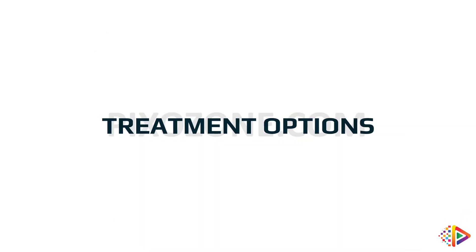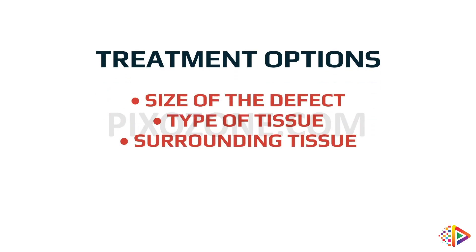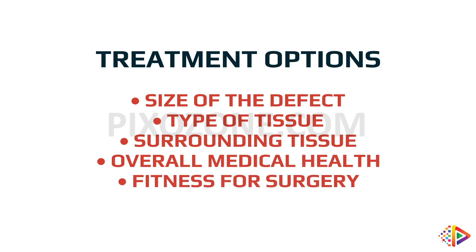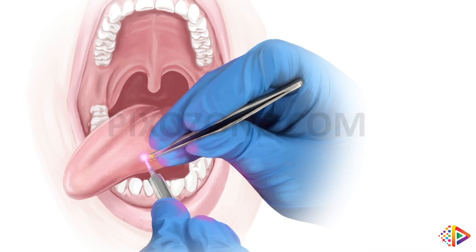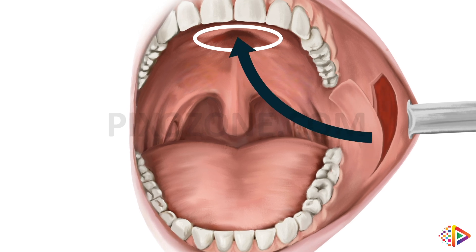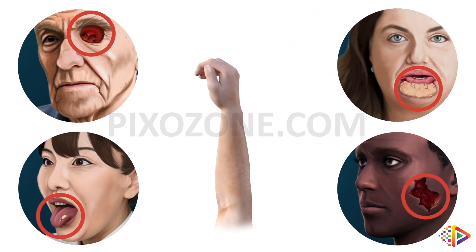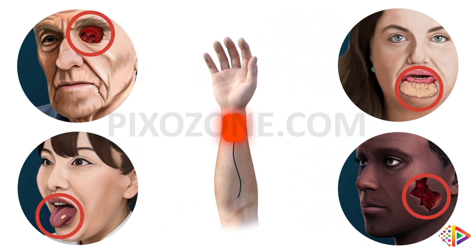These defects can be addressed in a variety of different ways depending on their size, type of tissue we are trying to reconstruct, the surrounding tissue, and other factors such as your overall medical health and fitness for surgery. If the hole is small, sometimes it is suitable to leave the body to heal by itself. Other times the hole can be reconstructed using tissue from nearby. One of the common ways of filling or reconstructing a defect or hole in the head and neck region is by using a free flap.